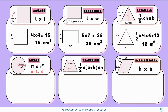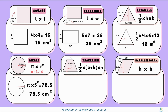Now moving on to the circle. The circle has a radius of 5 centimeters again. So we have pi times 5 squared, which gives us 78.5. Therefore, the area of the circle is going to be 78.5 centimeters squared.